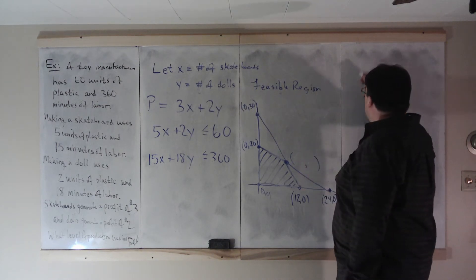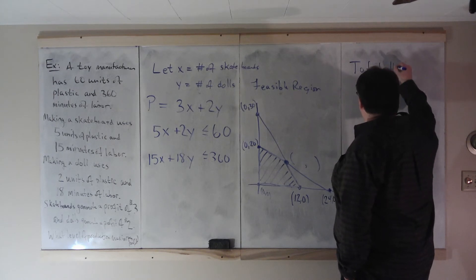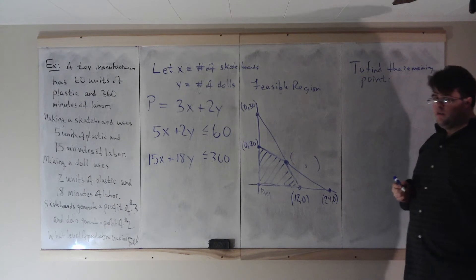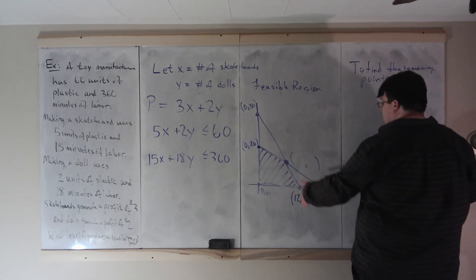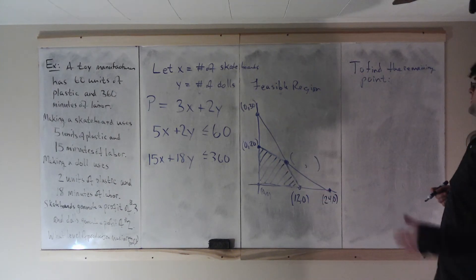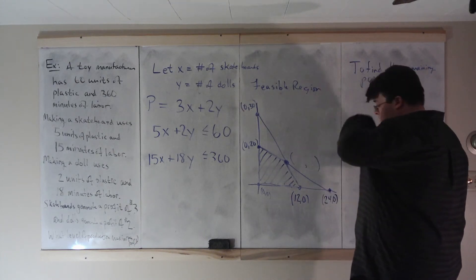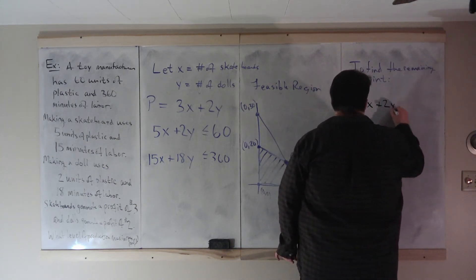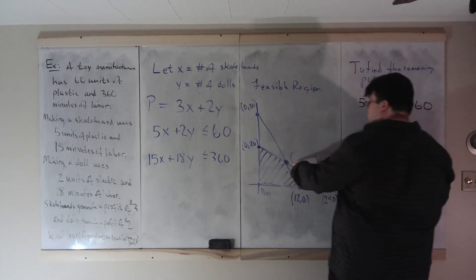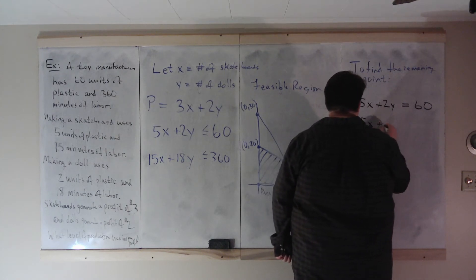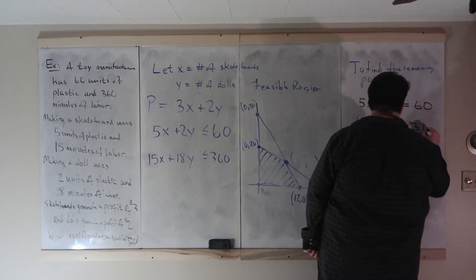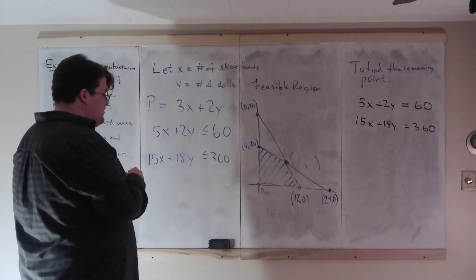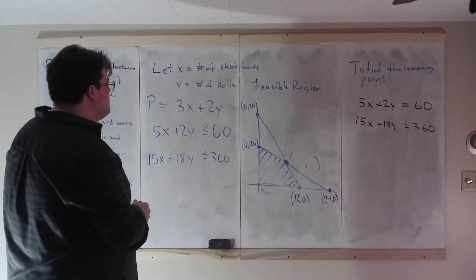Now we need to find the remaining intersection point where these two lines cross. That point lies on both lines simultaneously. To find it, we ignore the inequalities and set up the two equations as equalities. Those of you who know linear algebra could use a matrix, but doing it this way is actually faster. We have these two equations and we're going to cancel a variable.